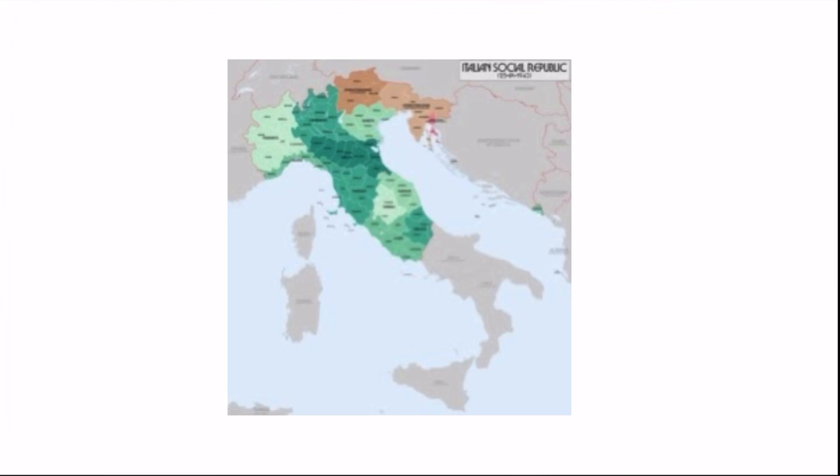But eventually, Nazi Germany, along with its puppets — which included the Italian Social Republic — was defeated. Eventually Japan was also defeated. World War II came to an end.